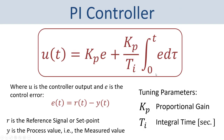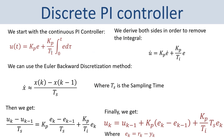We cannot implement this equation directly — we need to find a discrete version of this PI controller. Here you see how we find the discrete PI controller: we start with the continuous time PI controller equation, then we derive both sides to remove the integral, ending up with a formula containing the derivatives of U and E. We apply the Euler backward discretization method to this formula and end up with a basic discrete equation — the discrete version of the continuous PI controller — which we will implement in Arduino software.